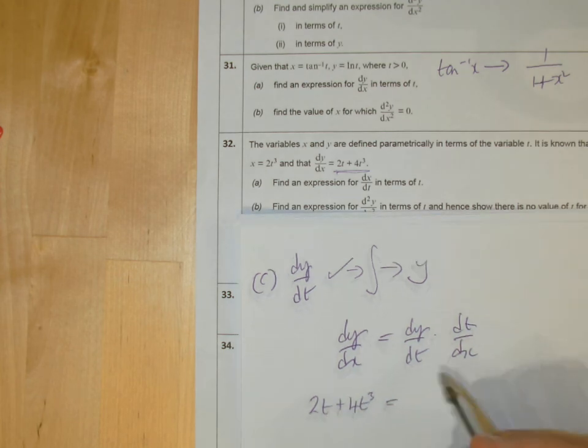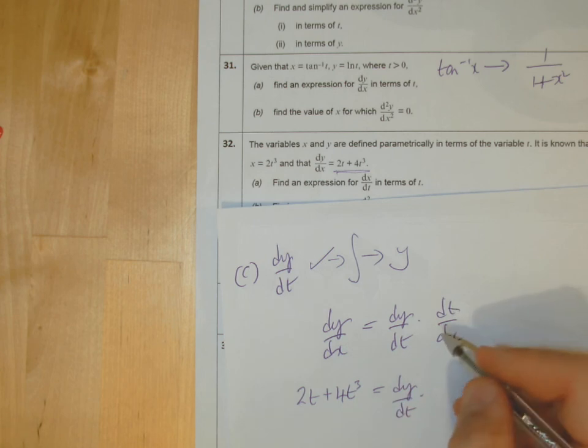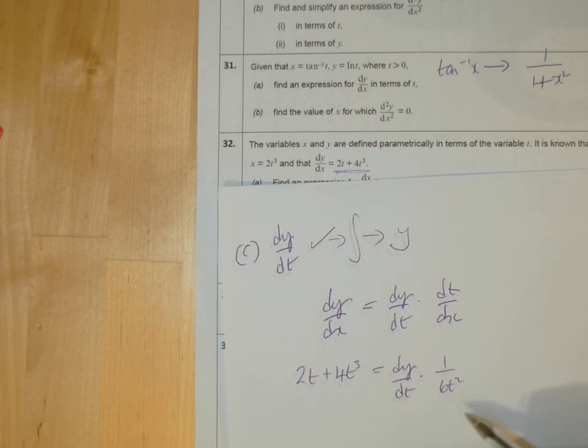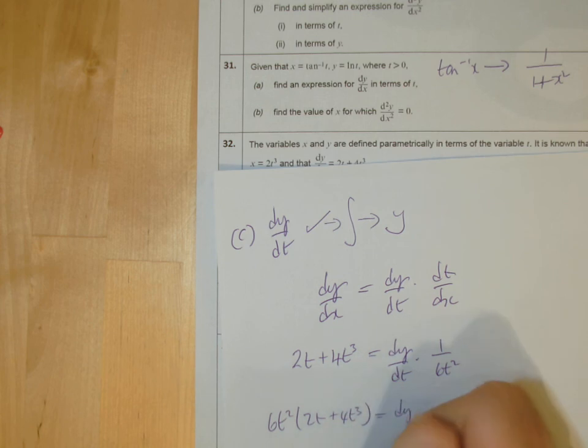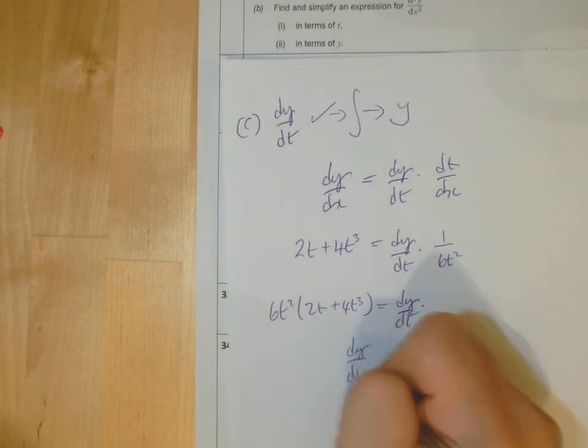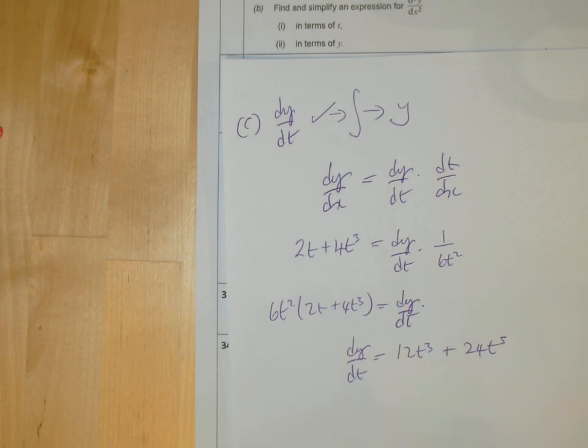dy dt is what we want to work out. And of course, dt dx, we already established before, was 1 over 6t squared. We established that before, we worked it out before. So you got this. And then all I'm going to do is think, well, let's take this over to the other side because I'm dividing by 6t squared. Take it over and multiply. So then you get dy dt equals 12t cubed plus 24t to the power 5. That's what it is when you multiply that out to add the powers. So that's dy dt.